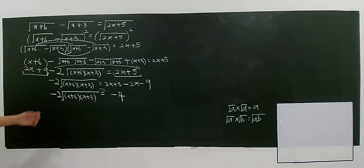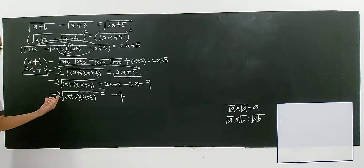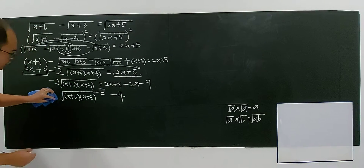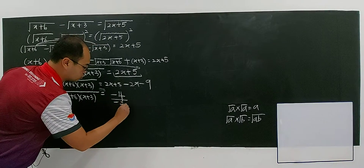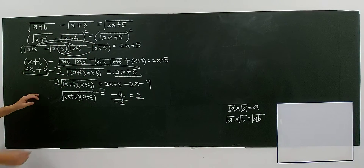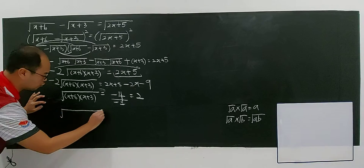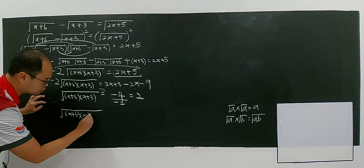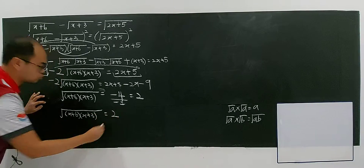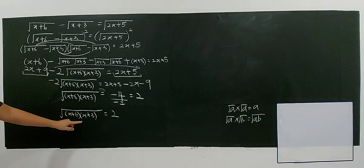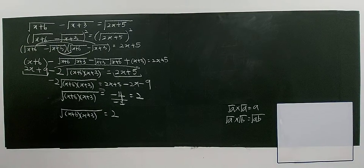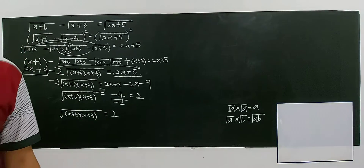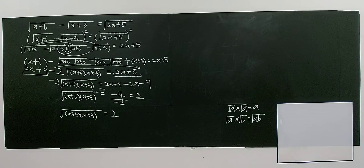You take negative 4 divided by negative 2, which gives you 2. So finally, square root of (x+6)(x+3) equals 2. This is much simpler, but there is still a square root, so you're going to apply squaring both sides one more time.